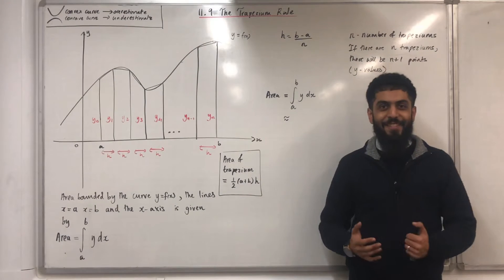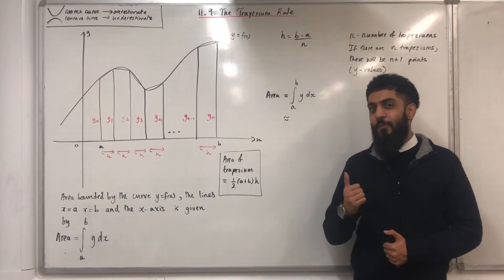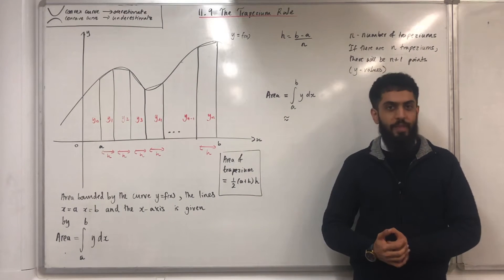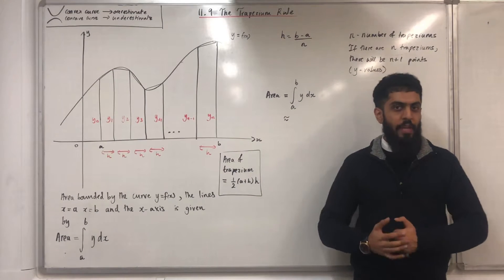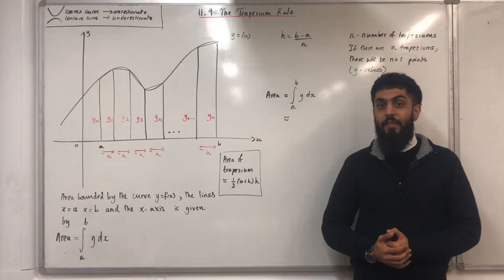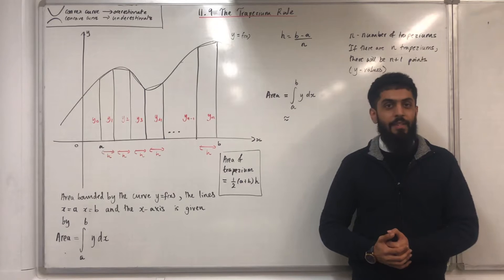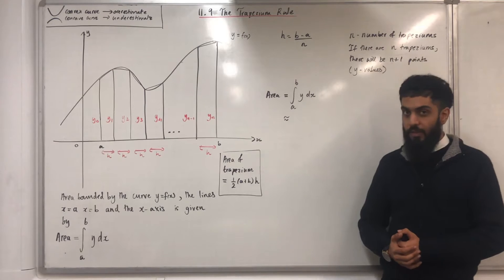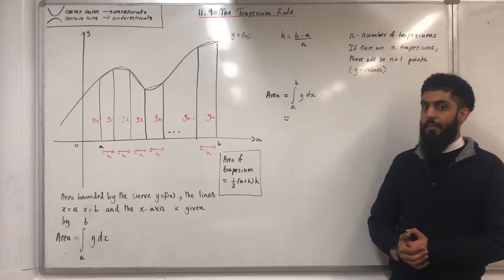Welcome back. In this video, I'll be looking at 11.9, the Trapezoid Rule. 11.9 represents Chapter 11, Section 9 of the Pearson A-Level Maths Pure Maths Year 2 textbook.